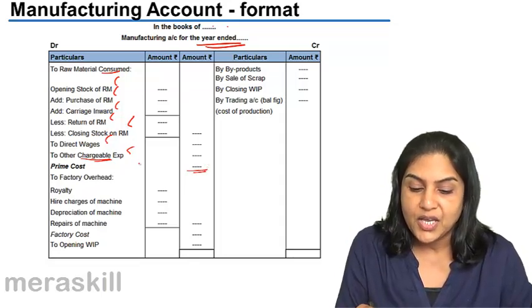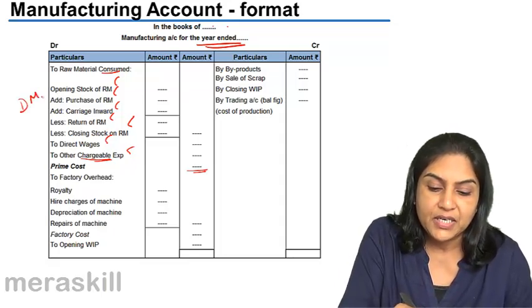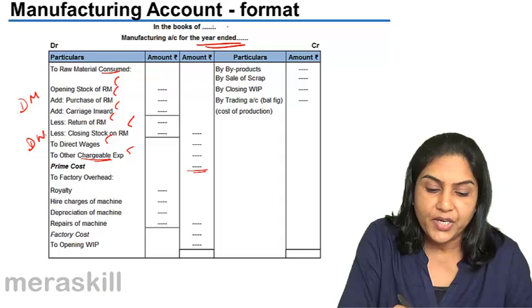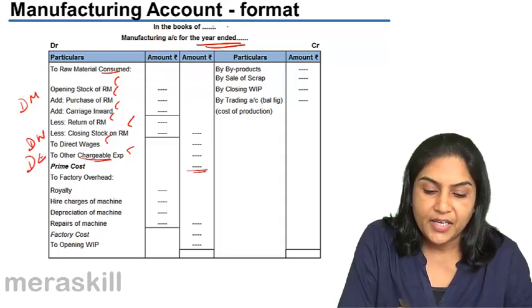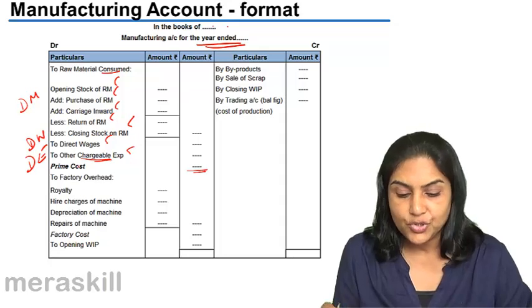So, raw material, wages and direct expenses. Direct material, direct wages and direct expenses add to give us prime cost.